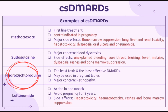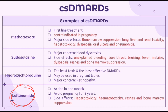Third is hydroxychloroquine, which is the least toxic and least effective csDMARD, so it is used in mild rheumatoid arthritis. It can be used in pregnant ladies, and its major concern is retinopathy, so patients should have a baseline eye exam and ongoing ophthalmic review while on treatment. The last csDMARD example is leflunomide; its action can be seen within one month. Patients on leflunomide should avoid pregnancy for two years, and side effects include hepatotoxicity, hematotoxicity, rashes, and bone marrow suppression.